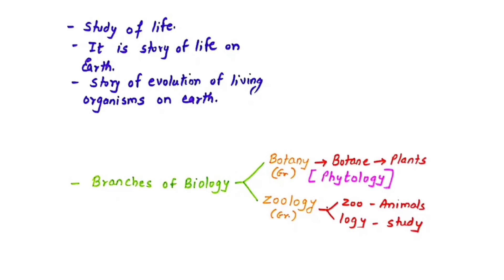Botany is a Greek word that comes from 'botane,' meaning plant. Botany can also be called phytology, because 'phyto' means plant and 'logi' means study. Zoology is also a Greek word with two parts: 'zoo' meaning animals and 'logi' meaning study. So both botany and zoology are Greek terms.